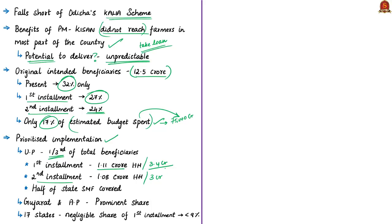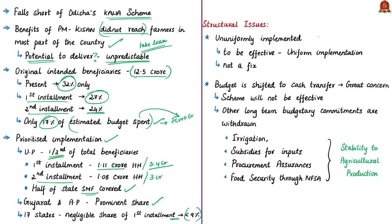About half of Uttar Pradesh's small and marginal farmers have been covered under the scheme. States like Gujarat and Andhra Pradesh also gained a prominent share in the implementation. But about 17 states have received only a negligible share of the first installment, amounting to less than 9%. The author says for the scheme to be effective, it has to be uniformly implemented — every state should have an equitable number of beneficiaries without giving priority to any particular state.